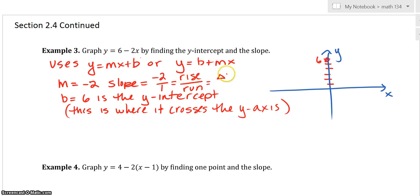Or what the book likes to say, the change in y over the change in x. So from this point, we know to get from one point to another, we need to go down 2 and over 1.